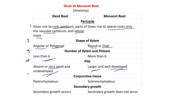The fifth difference is in the conjunctive tissue. This is the tissue which lies between the vascular bundles — between the xylem and the phloem bundle, or between the xylem bundles. It is completely parenchymatous in the case of dicot root, while it may be sclerenchymatous in the case of monocot root, providing mechanical support to the root.